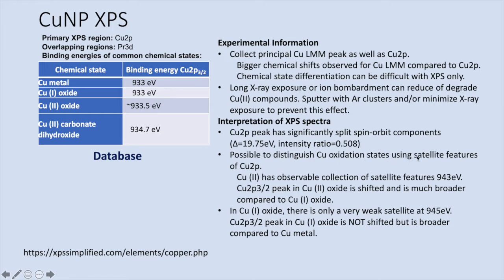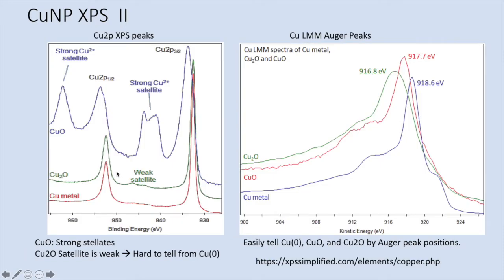To distinguish the copper species, you have to use the satellite features between CuO and Cu2O. CuO has a large satellite and the primary peak is a little bit higher and wider. So it's very easy to tell CuO from Cu2O.